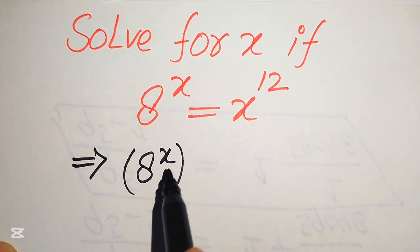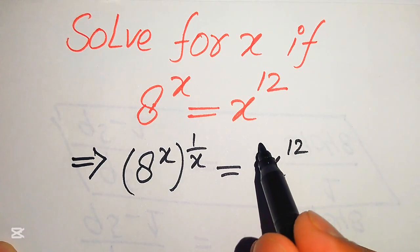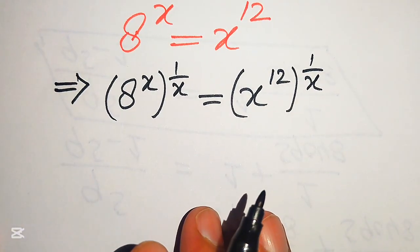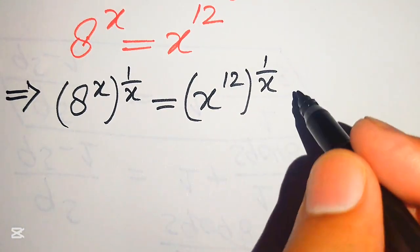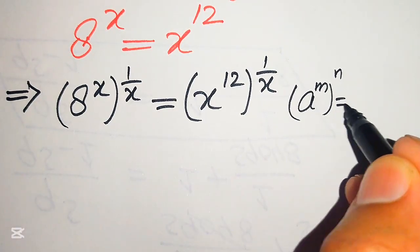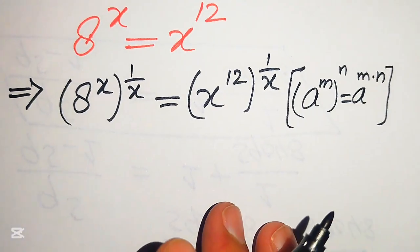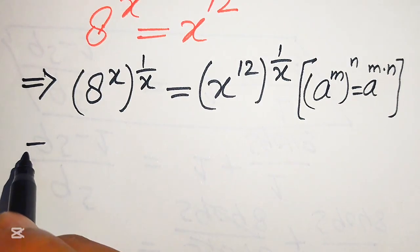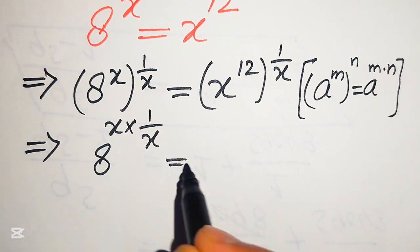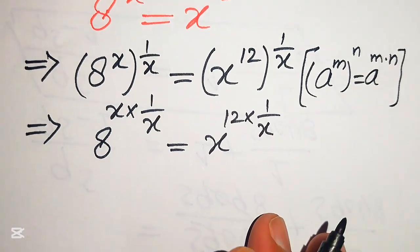So it will be written as 8 to the power of x, and its whole power 1 over x, is equals to x to the power of 12, and its whole power is 1 over x. Now we need to use the exponent law: if we have a to the power of m to the power of n, it equals a to the power of m multiplied by n. So we multiply these two exponents: 8 to the power of x times 1 over x, equals x to the power of 12 times 1 over x.